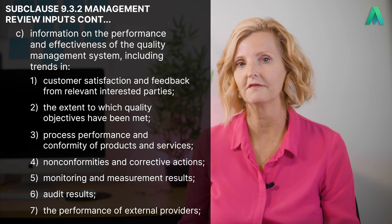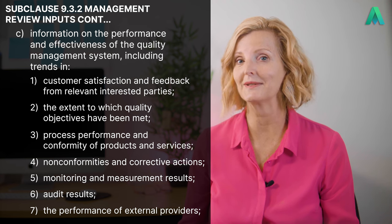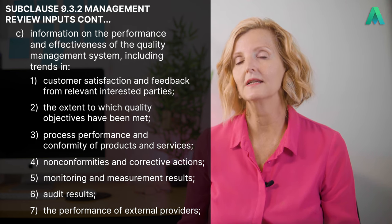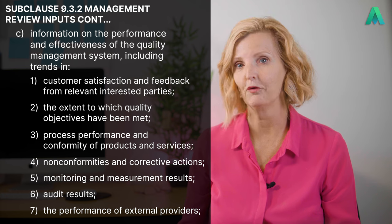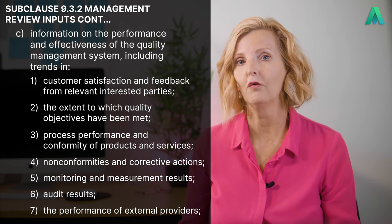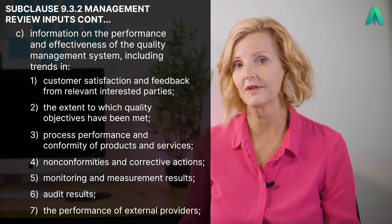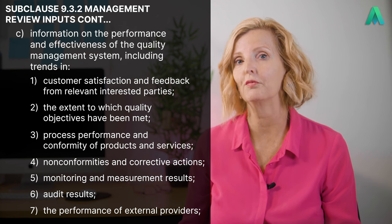This sub clause moves on to list quite a few other areas that need to be taken into consideration, stated as (c) information on the performance and effectiveness of the quality management system, including trends in: (1) customer satisfaction and feedback from relevant interested parties, (2) the extent to which quality objectives have been met, (3) process performance and conformity of products and services, (4) non-conformities and corrective actions, (5) monitoring and measurement results, (6) audit results, and (7) the performance of external providers.